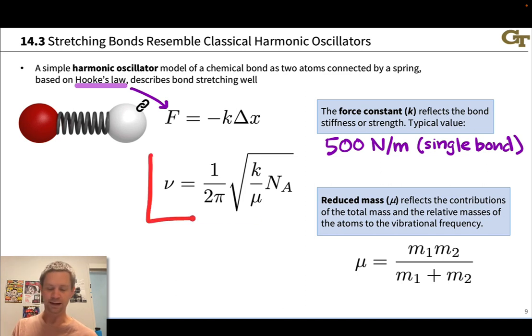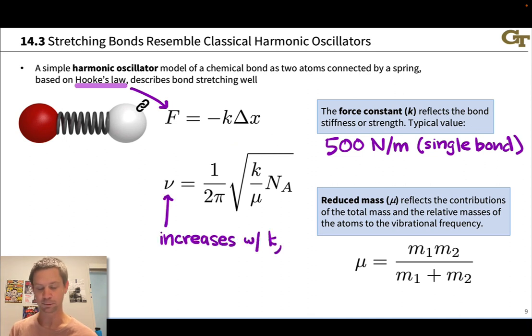Reduced mass does go up with mass, and so you can think of it as a rough measure of the masses of atoms involved in the bond. From this equation that relates the vibrational frequency to these variables, we can recognize that this vibrational frequency increases with the force constant, with k, and it decreases as the reduced mass goes up.